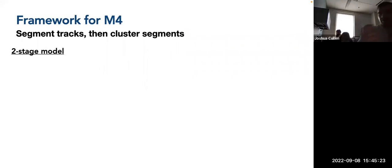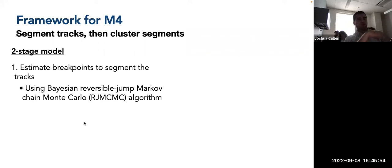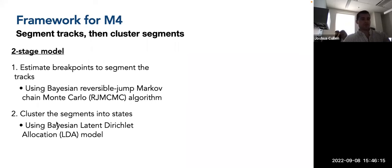This is a two-stage model: first you segment the tracks, inspect the segmentation process to make sure it worked properly, and then feed those results into the clustering model. The first stage estimates breakpoints to segment the tracks, analyzing each track separately using a Bayesian reversible jump Markov chain Monte Carlo algorithm. This allows proposing the removal, addition, or change of breakpoints — a flexible way to account for uncertainty without testing different models and comparing them using AIC, BIC, or DIC. The second stage clusters these segments into states using a Bayesian latent Dirichlet allocation model.